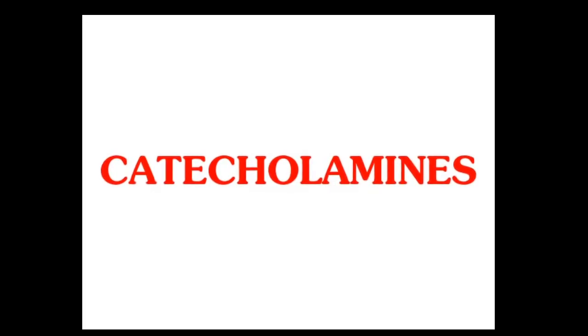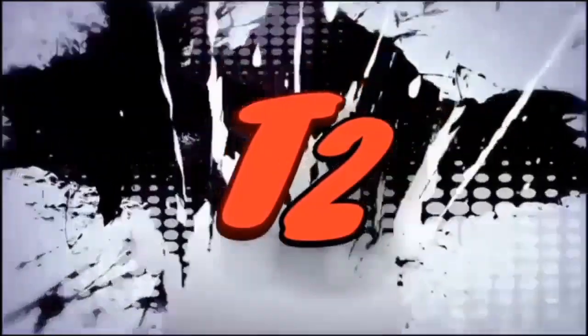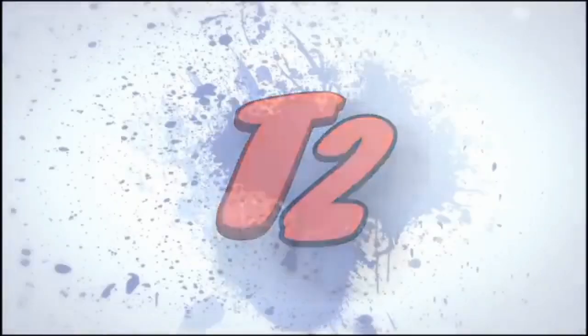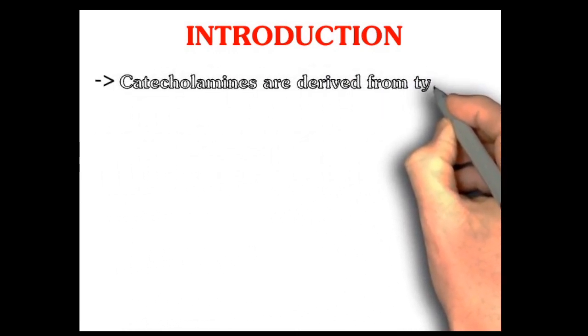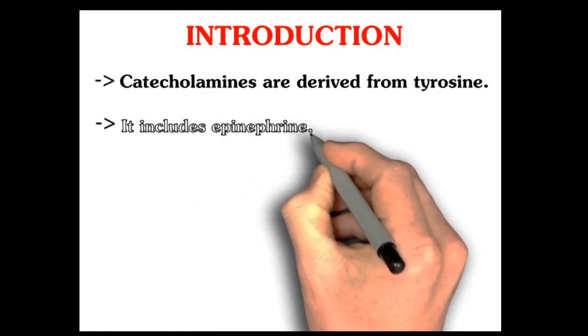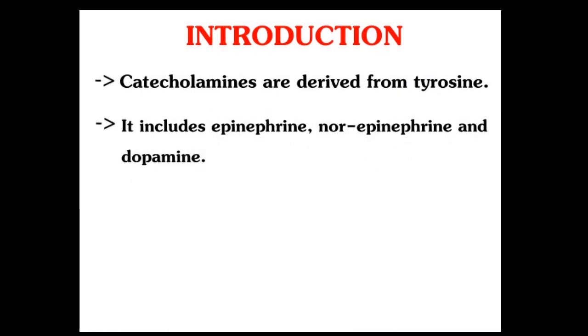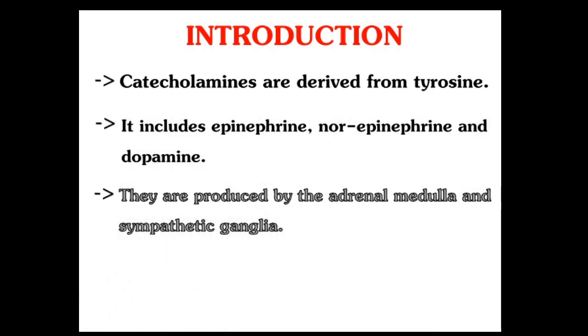Hello friends, this is the fourth video on phenylalanine metabolism and today we will see catecholamines, mainly epinephrine. Catecholamines are derived from tyrosine; they include epinephrine, norepinephrine, and dopamine, and they are produced by the adrenal medulla and sympathetic ganglia.